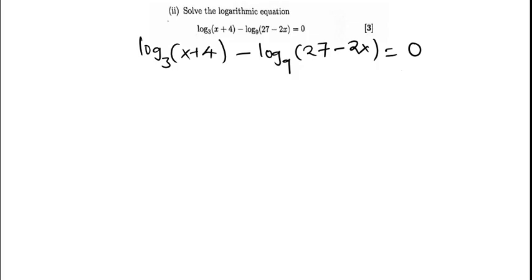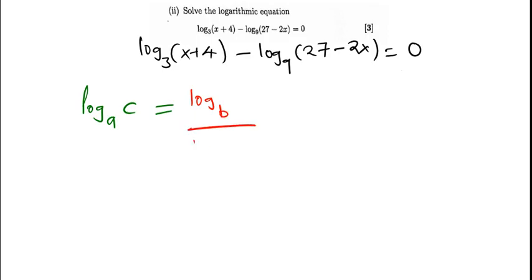The best way is to show you first how you convert from one base to the other. So if you have log base A of C, and you wanted to convert this to another base B, the result would be log base B of C divided by log base B of A. You get the C on top and then the A down — that's how you convert from one base to the other.